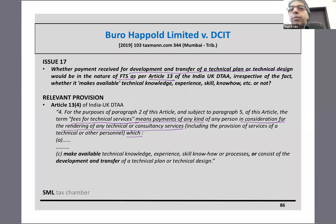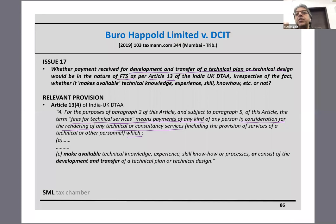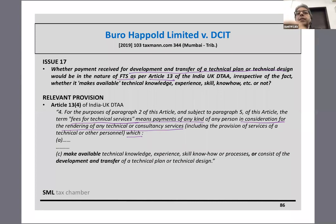Coming to the next issue - we had finished permanent establishment, nine issues; we finished royalty, five issues. On FTS, we have done about three issues, and now this is the fourth issue there, issue number 17.